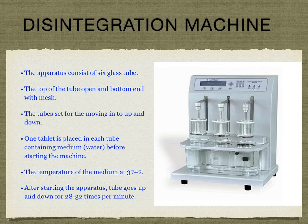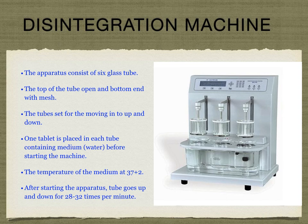This is the disintegration machine, and it consists of six glass tubes. The top of each tube is open and the bottom end has a mesh. The tubes are set to move up and down. One tablet is placed in each tube containing a medium, which is water, before starting the machine. The temperature of the medium is 37 degrees. After starting the apparatus, the tubes go up and down 28 to 32 times per minute.